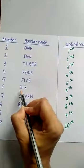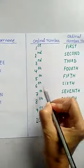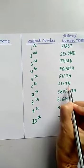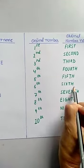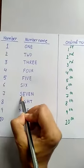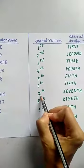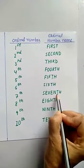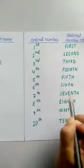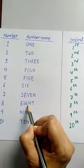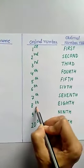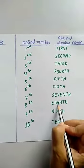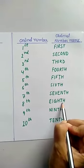Number 6 is sixth, S-I-X-T-H, sixth. Number 7 is seventh, S-E-V-E-N-T-H, seventh. Number 8 is eighth, E-I-G-H-T-H, eighth.